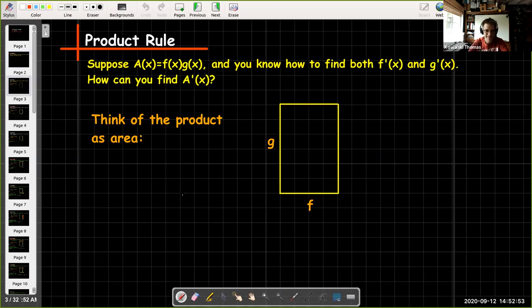Well, it's not as simple as the sum or the difference, and so to understand where the formula comes from, let's draw a picture. Let's think of the product f times g as the area of a rectangle with base f and height g.